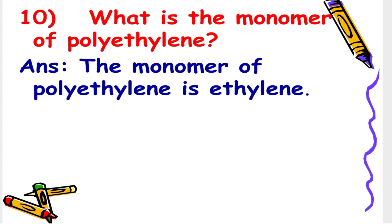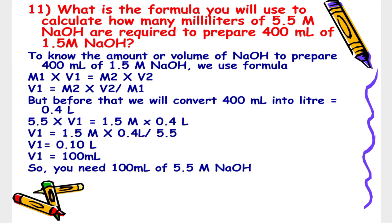Next: What is the monomer of polyethylene? The answer is the monomer of polyethylene is ethylene. Next: What is the formula you will use to calculate how many ml of 5.5 M NaOH are required to prepare 400 ml of 1.5 M NaOH? To find the volume of NaOH needed, we use the formula M1 × V1 = M2 × V2.